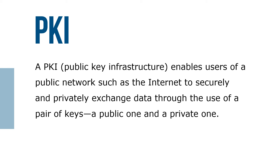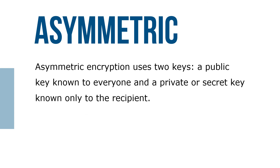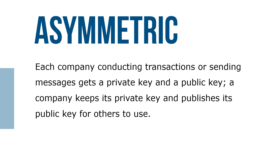A public key infrastructure, or PKI, enables users of a public network such as the internet to securely and privately exchange data through the use of a pair of keys: a public one and a private one. Asymmetric encryption uses two keys — a public key known to everyone and a private or secret key known to only one recipient. Each company conducting transactions or sending messages gets a private key and a public key; a company keeps its private key and publishes its public key for others to use.